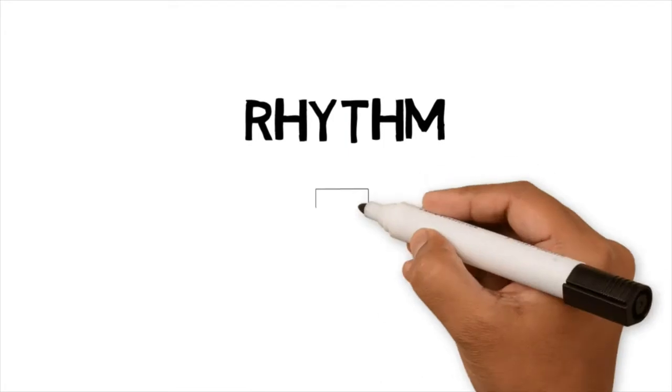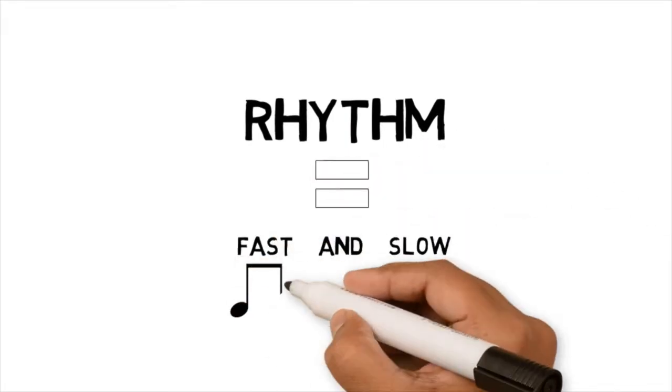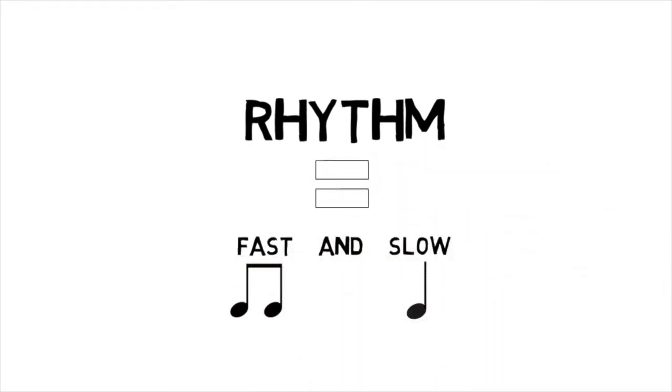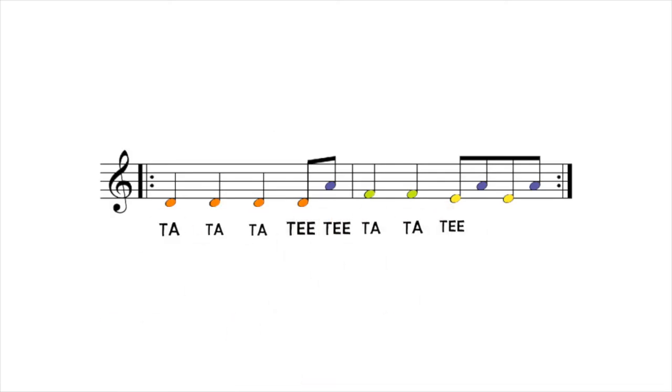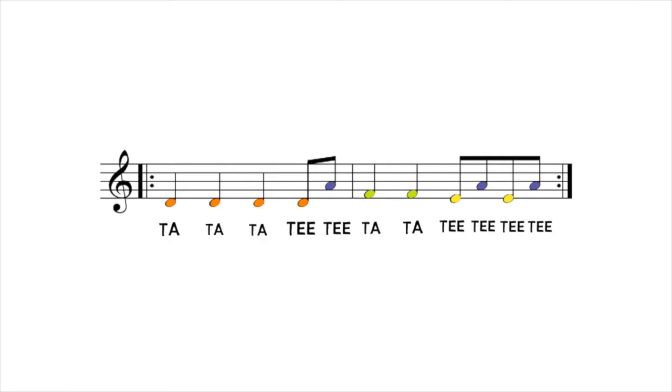Now let's add a rhythm to these notes. Rhythm is what makes some notes faster and others slower. We're going to use the words ta ta ta ti ti ta ta ti ti ti to help us remember the rhythm and add it to the notes.